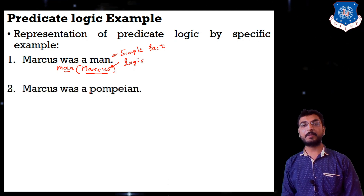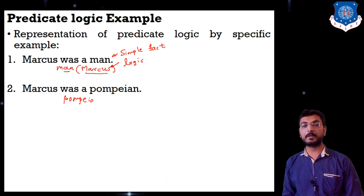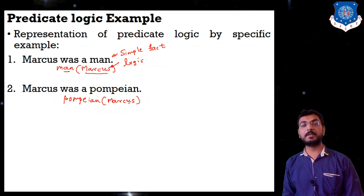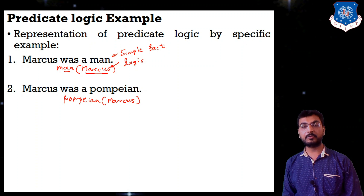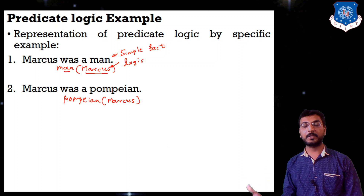Second statement: 'Marcus was a Pompeian.' The actor Marcus is placed inside the function, and Pompeian — the noun — is outside. So this is written as pompeian(Marcus). Pompeian is just like a regional caste in Rome. For example, I am Gujarati, so definitely I am Indian. Gujarati is one regional province within India. Similarly, if Marcus was a Pompeian, then definitely he would be Roman.